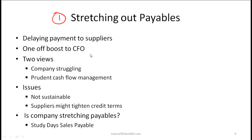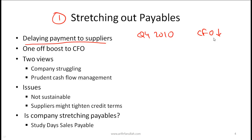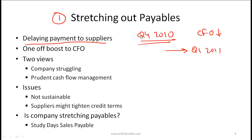Technique one is stretching of payables, which means simply delaying payment to suppliers. In Q4 2010, if you need to make payments to suppliers, those payments would reduce your CFO. Instead, you push out the payment to Q1 2011, so CFO for 2010 looks better because the negative cash outflow to the supplier is not happening in this quarter. You have effectively given a one-off boost to cash flow from operations.